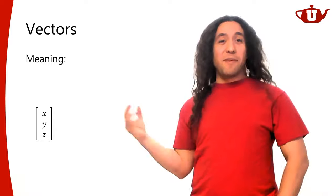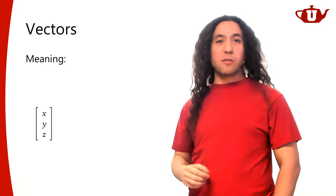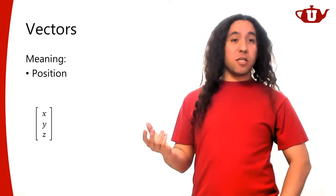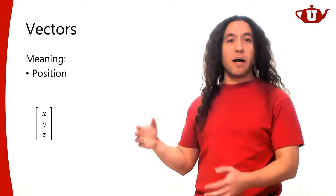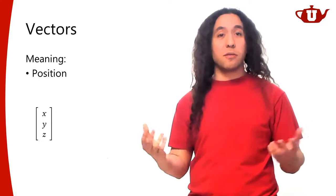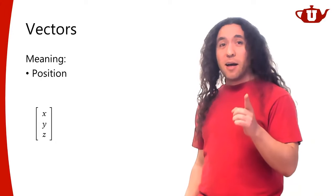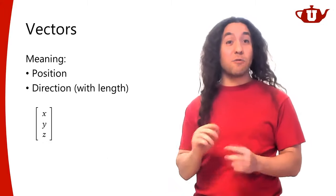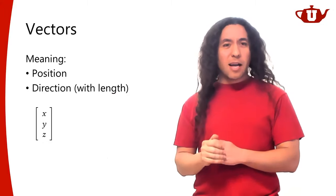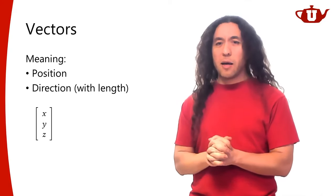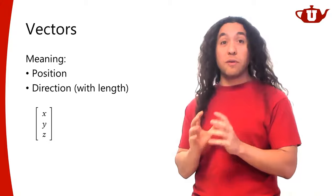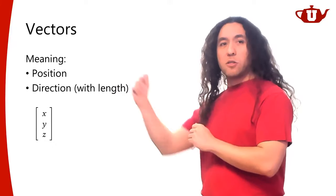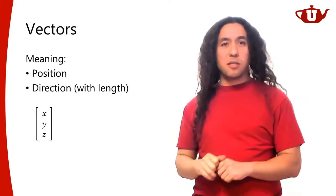A vector of three values — what does that really mean? It can mean a position in space: X, Y, and Z coordinates of something. It can also mean something different but related — direction with length. These are two different things. One defines a direction with some magnitude, the other is just a position in space.